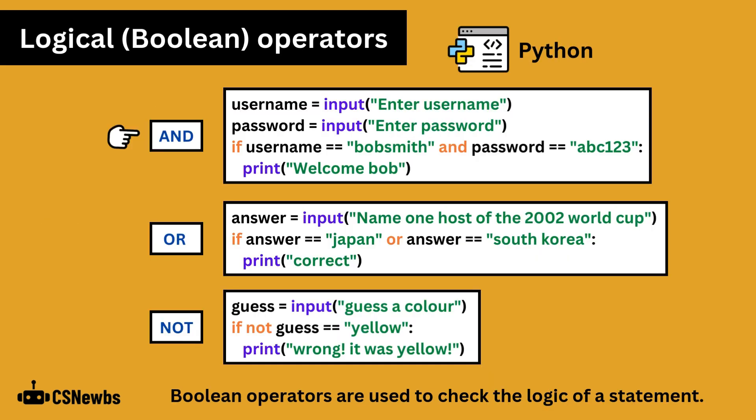Boolean operators are used to check the logic of a statement. The AND operator is used in the first example to check if both the username and the password are equal to specific values. The second example uses the OR operator to check that at least one of the two parts of the condition is correct, that the answer is either equal to Japan or equal to South Korea.